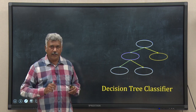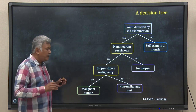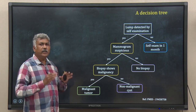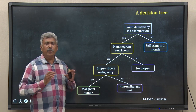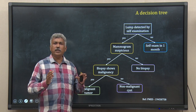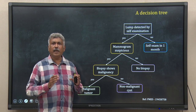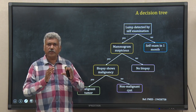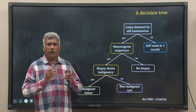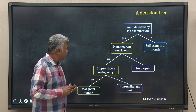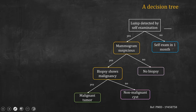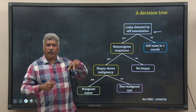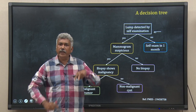I have taken an example. Suppose this is a decision tree used by a clinician to decide upon breast cancer. Let us understand how this tree works for a clinician. In this tree, each node gets divided in two parts, so it is a binary tree.